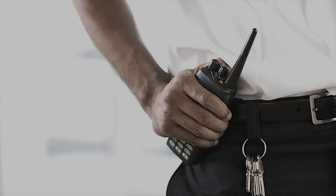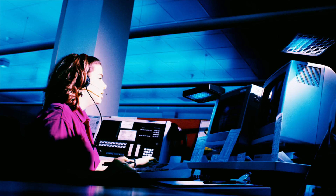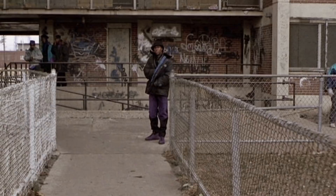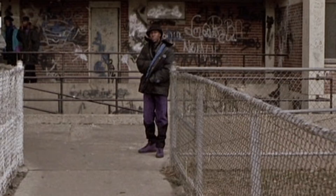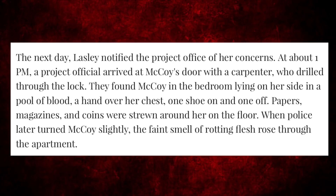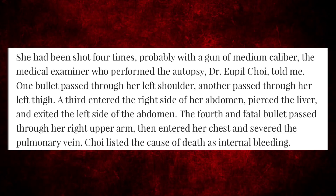The next day, her neighbor called police and asked them to check on Ruthie. She also called the project office and asked for a manager to open Ruthie's door — even though her own children advised her not to, since the laws in Grace Abbott Homes were enforced by drug dealers and you weren't supposed to talk to police about anything. Someone from the Chicago Housing Authority came to Ruthie's door with a carpenter who drilled the lock. Once they got inside, they found Ruthie lying on her bedroom floor. She had been shot four times — in the shoulder, the thigh, the abdomen, and the right arm. A doctor said that even if she had made it to the hospital, she probably still would not have survived.